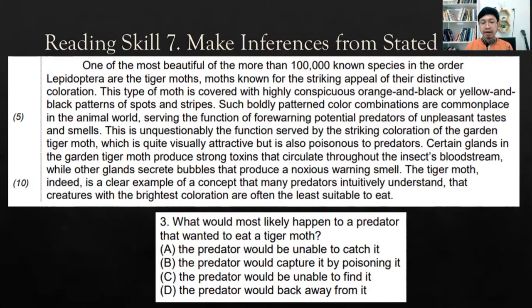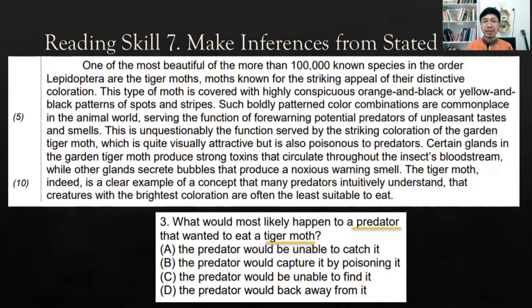Let's get to the example. We always start from the question: 'What would most likely happen to a predator that wanted to eat a tiger moth?' The keywords from this question are 'predator' and 'tiger moth.' Let's identify and locate the keywords in the passage. We can find tiger moths in one clause and predators in the next clause — two clauses containing the keywords.